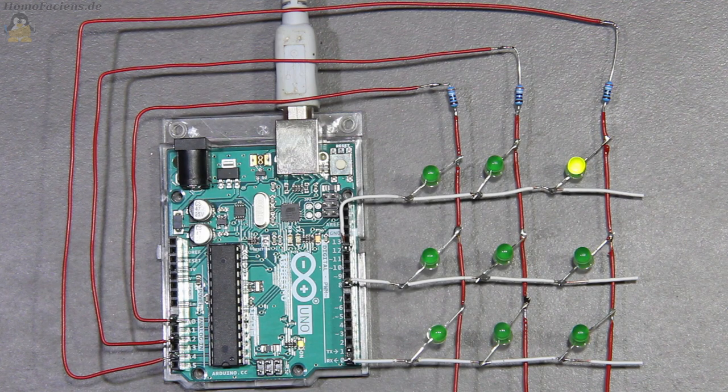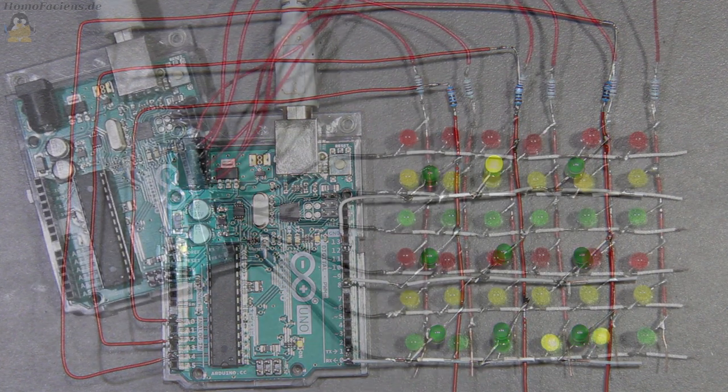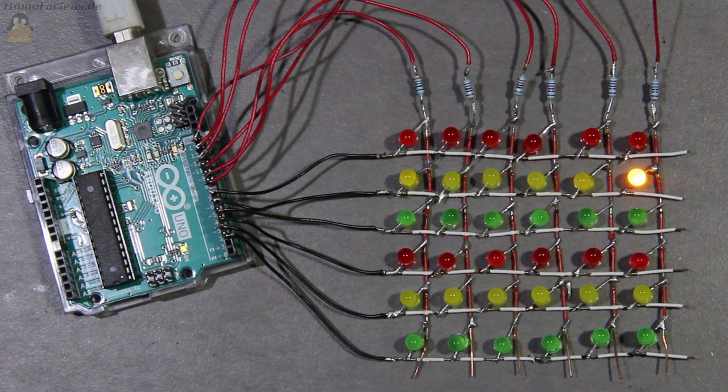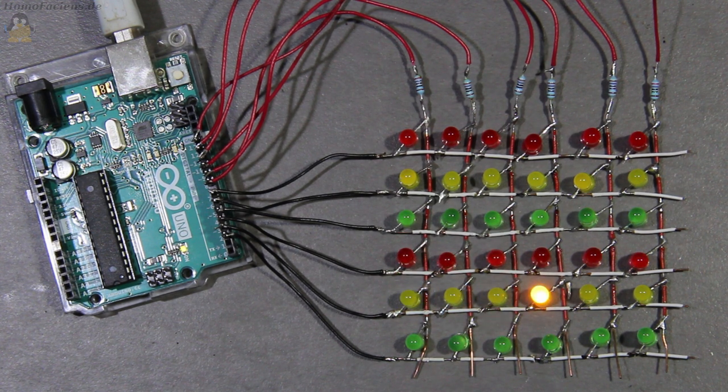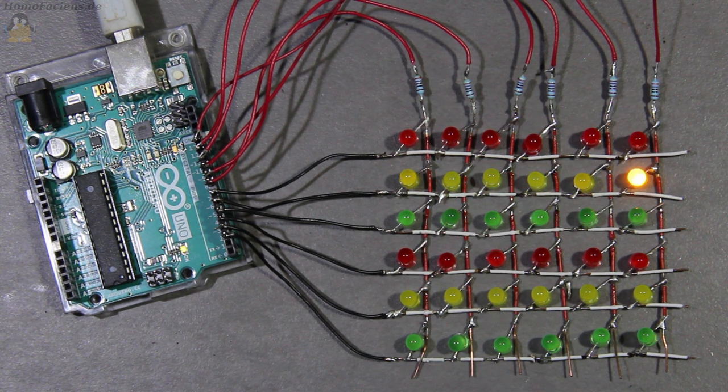Six GPIOs are sufficient to turn on 9 LEDs individually. The LED matrix can be extended as required as long as there is a sufficient number of GPIOs available. Here I control a matrix composed of 36 different colored LEDs with only 12 GPIOs on an Arduino Uno.